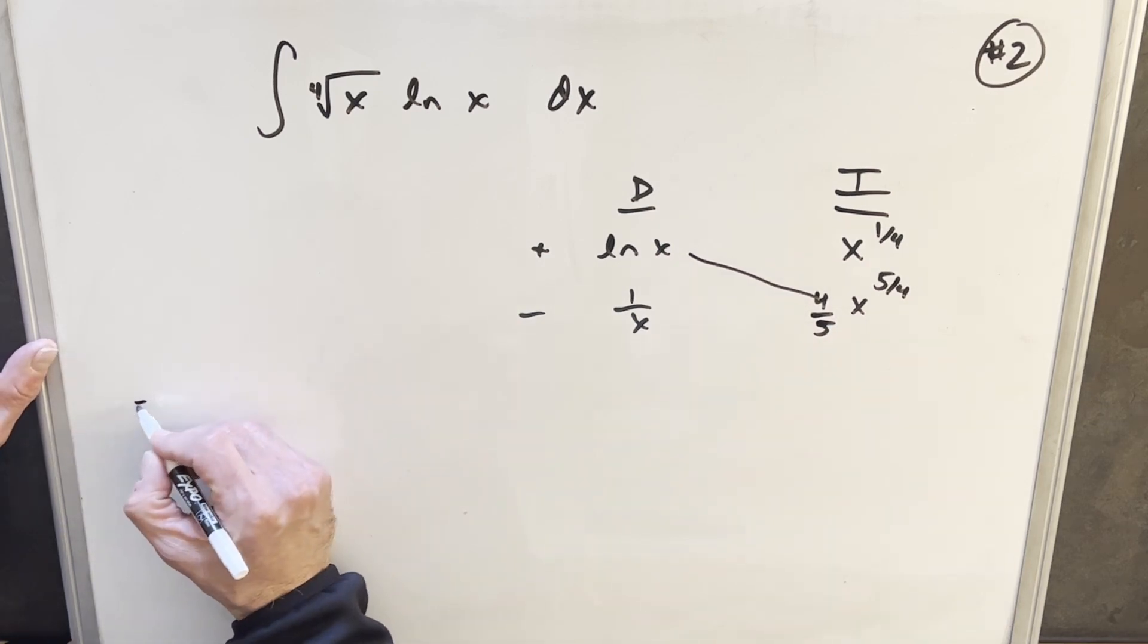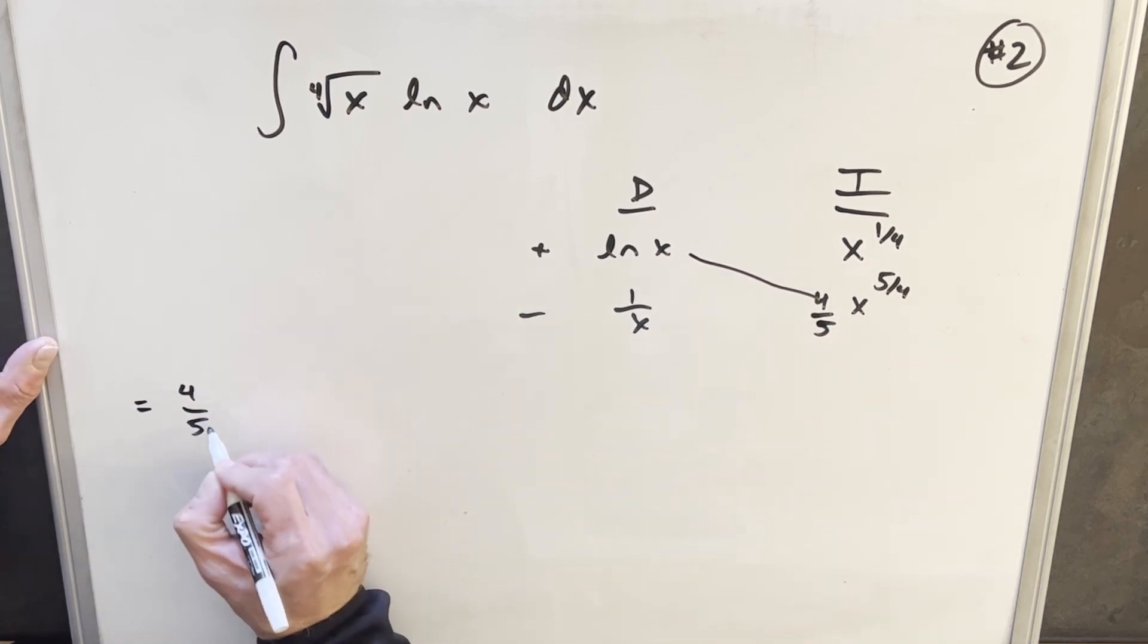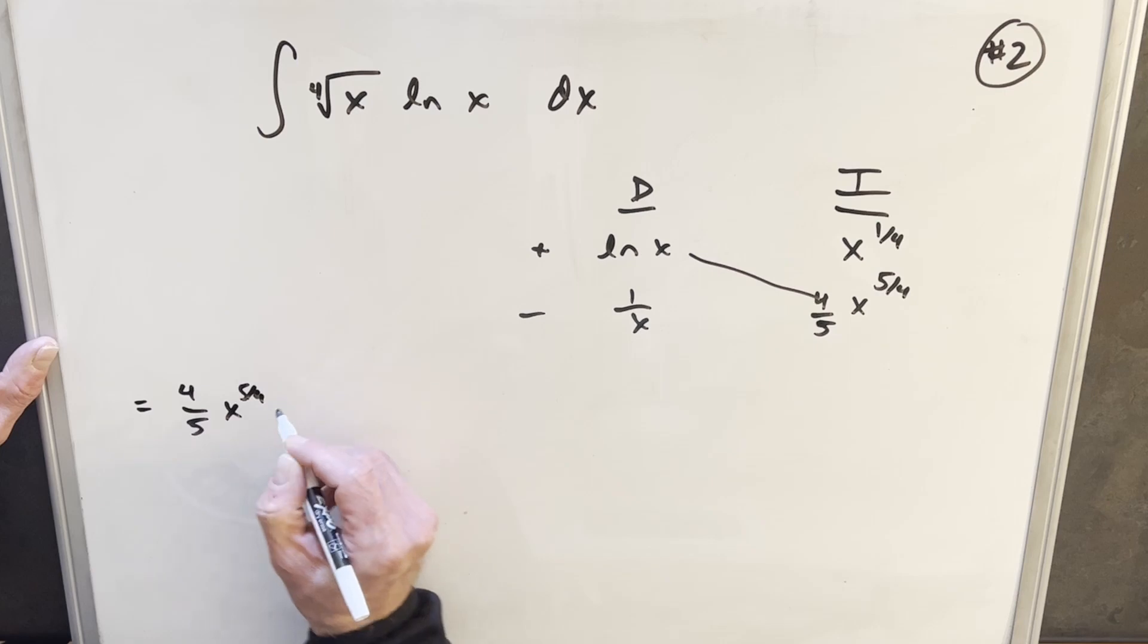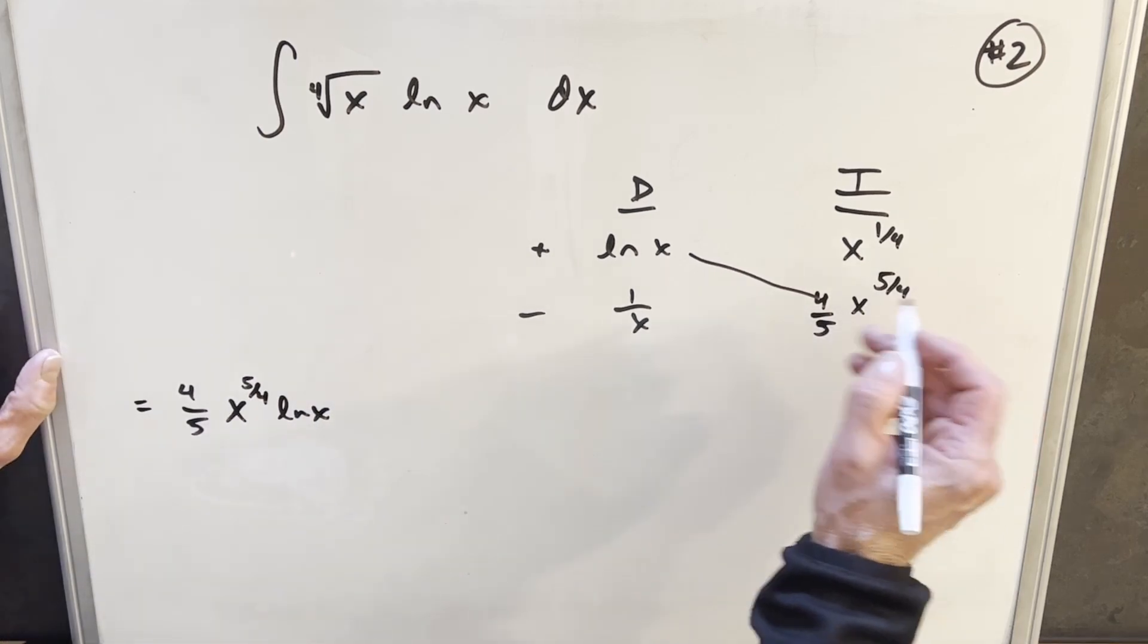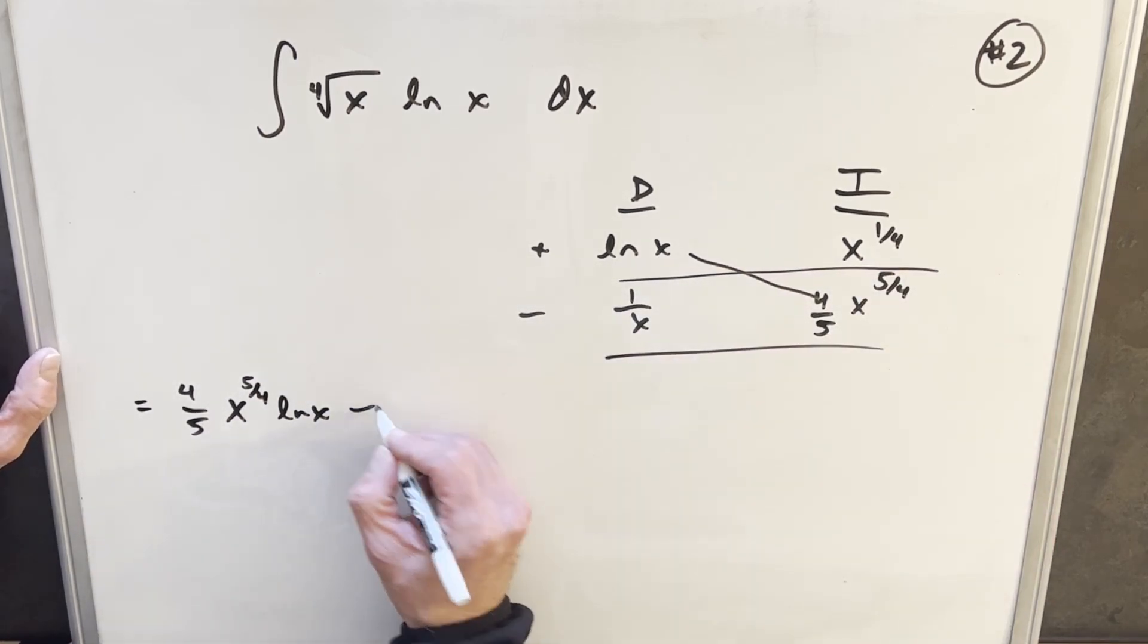Then we have part of our answer right here on the diagonal. Okay, so we'll write it as four-fifths x to the five-fourths ln x. Then here, this row is going to be an integral. Okay, so we'll bring out our minus sign. We'll have an integral.